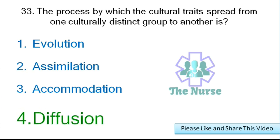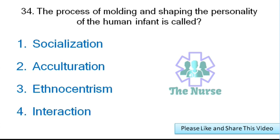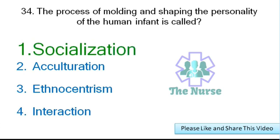Next question: The process of molding and shaping the personality of a human infant is called what? Options: socialization, acculturation, ethnocentrism, or interaction. Correct answer: socialization.